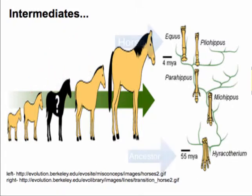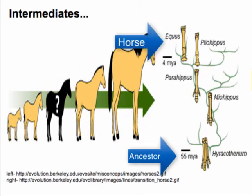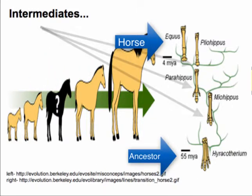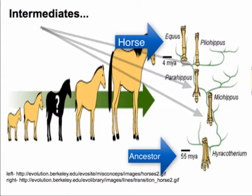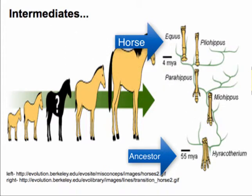We should see some features that are sort of horse-like and some features shared with the common ancestor. As we get closer to the horse, we should see more horse features, and as we go further into the past, we should see more of the ancestor traits.